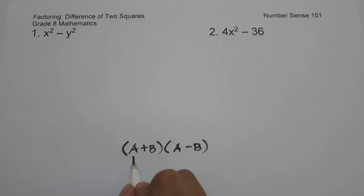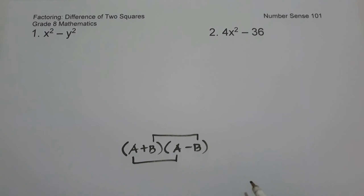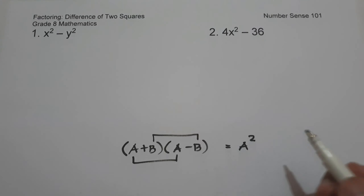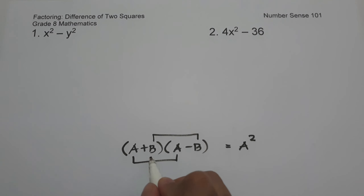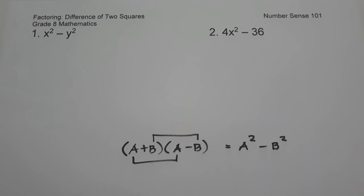If you are going to simplify this, let us simply multiply the first term to first term and last term to last term. So we have a times a, that is a squared, and b multiplied by negative b, that is negative b squared. That means the factored form of the difference of two squares is simply the sum and difference of the square root of the first term and last term.